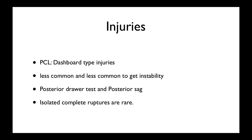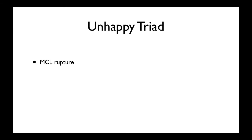It's rare to get an isolated complete rupture. The unhappy triad involves a valgus stress — someone smashes your knee from the side with the knee flexed, such as during a tackle while running. A rotational valgus force causes the MCL to rupture, then the ACL ruptures, and then the lateral meniscus rips. Lateral meniscal damage is very difficult to repair and much worse than medial meniscal damage — it may end a sporting career prematurely.